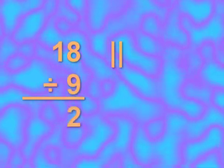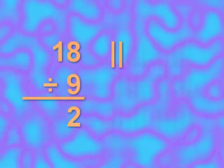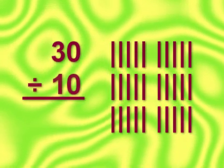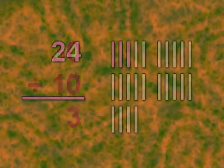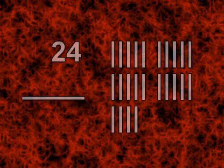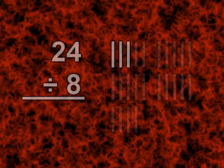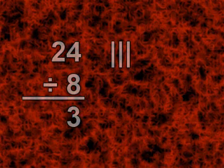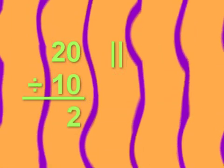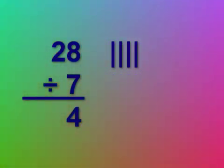18 divided by 9 equals 2. 30 divided by 10 equals 3. 24 divided by 8 equals 3. 20 divided by 10 equals 2. 28 divided by 7 equals 4.